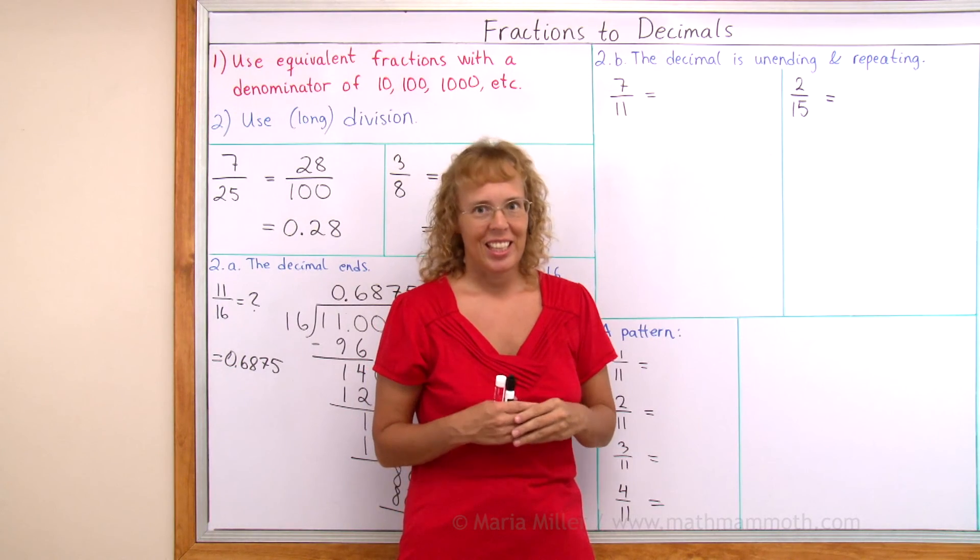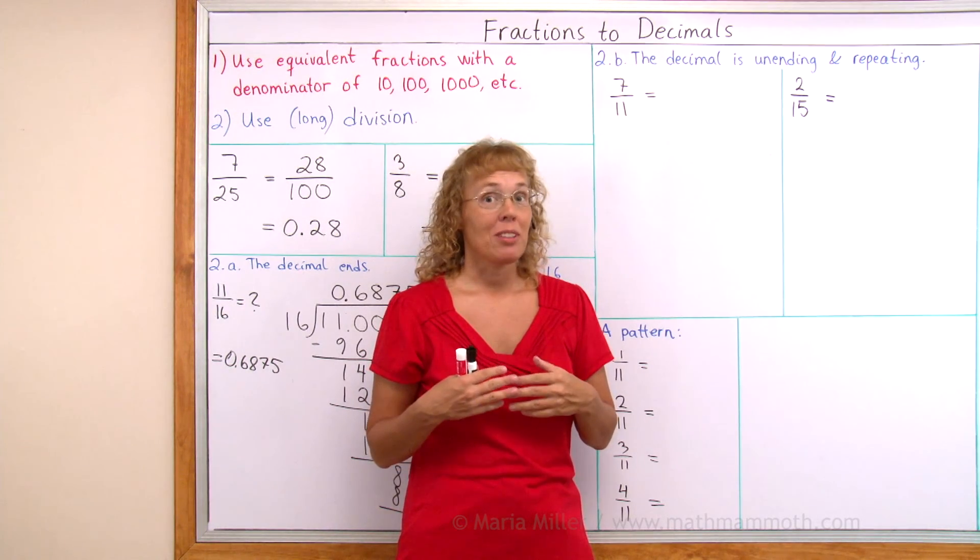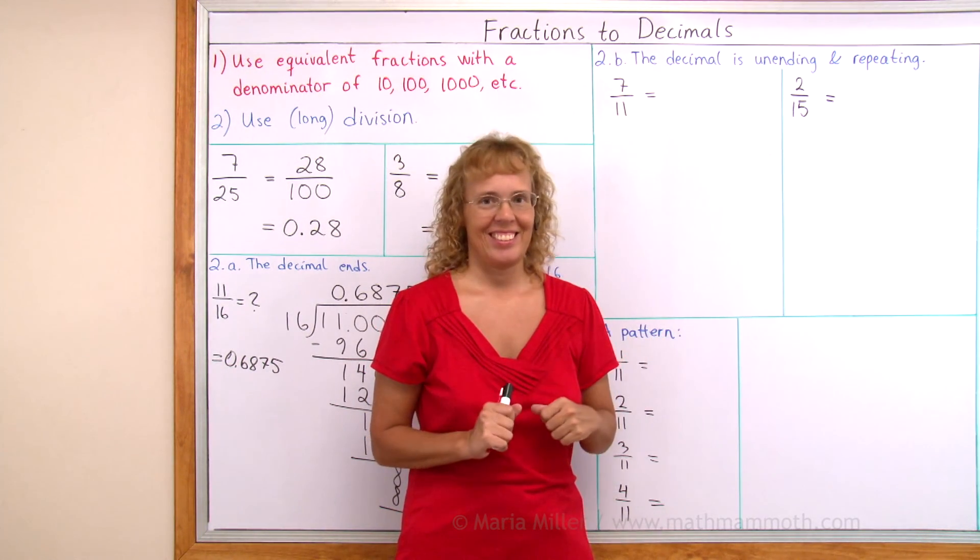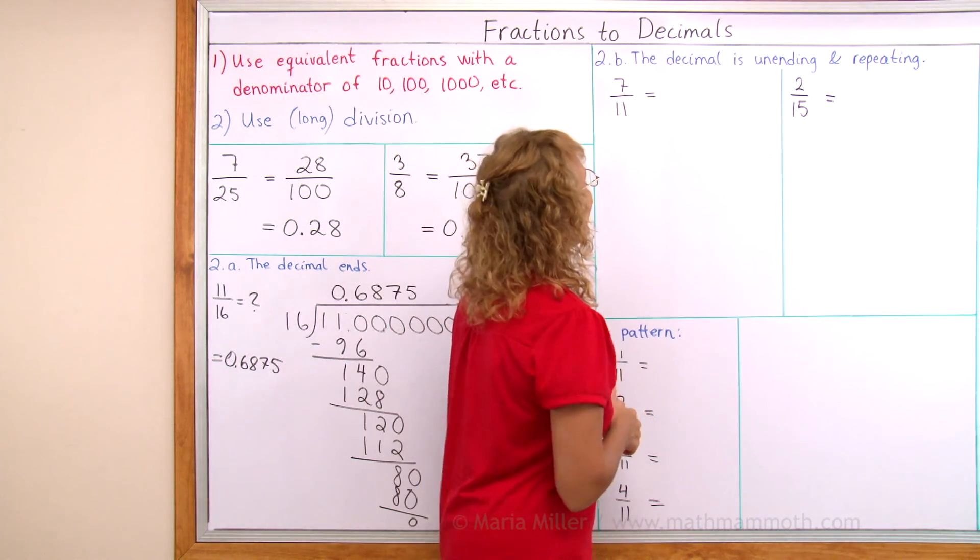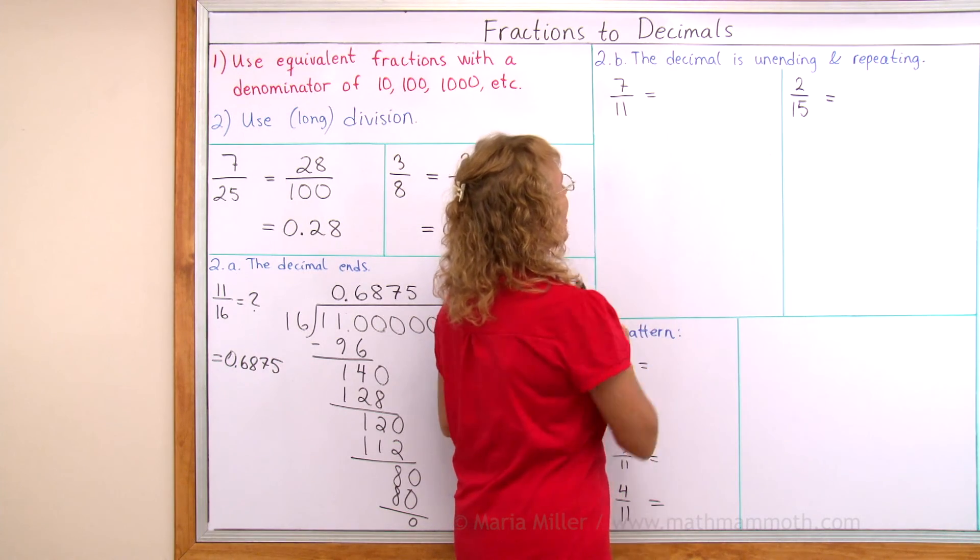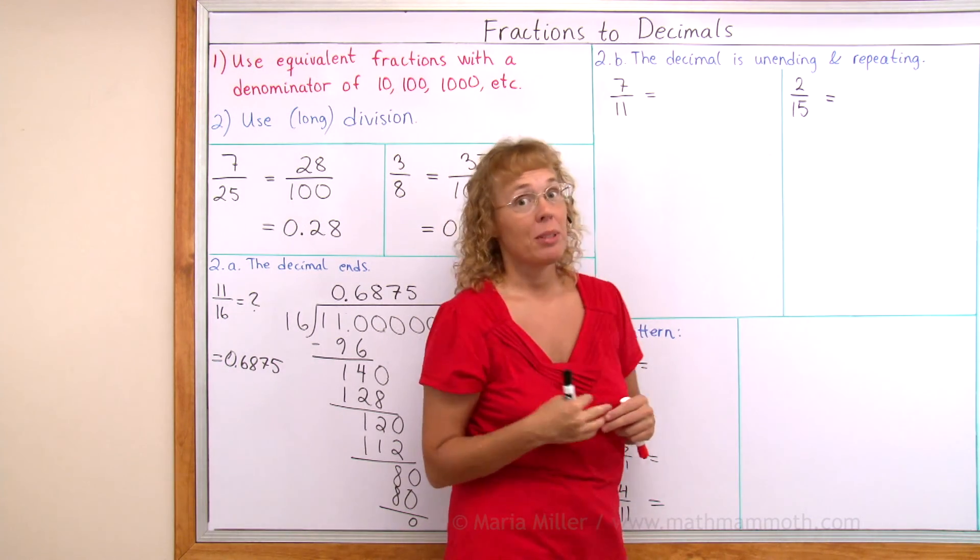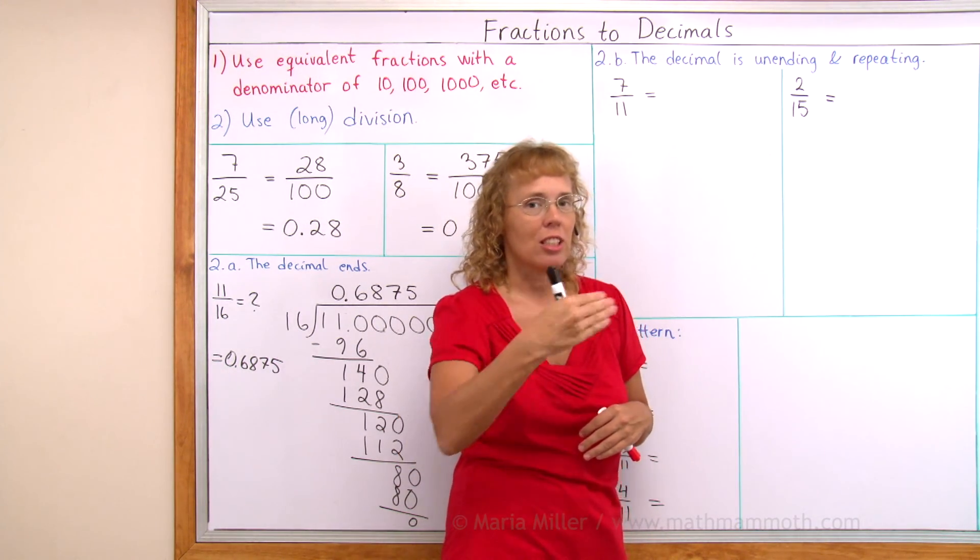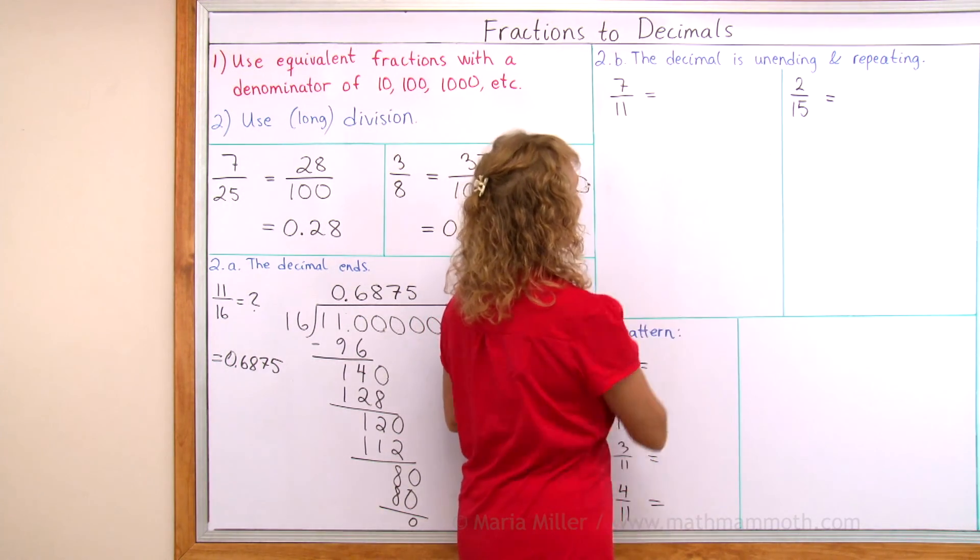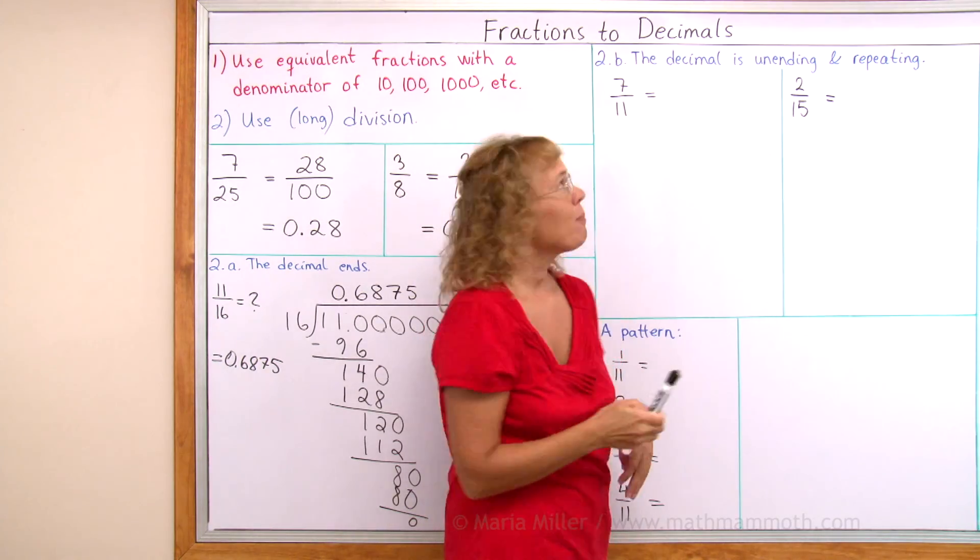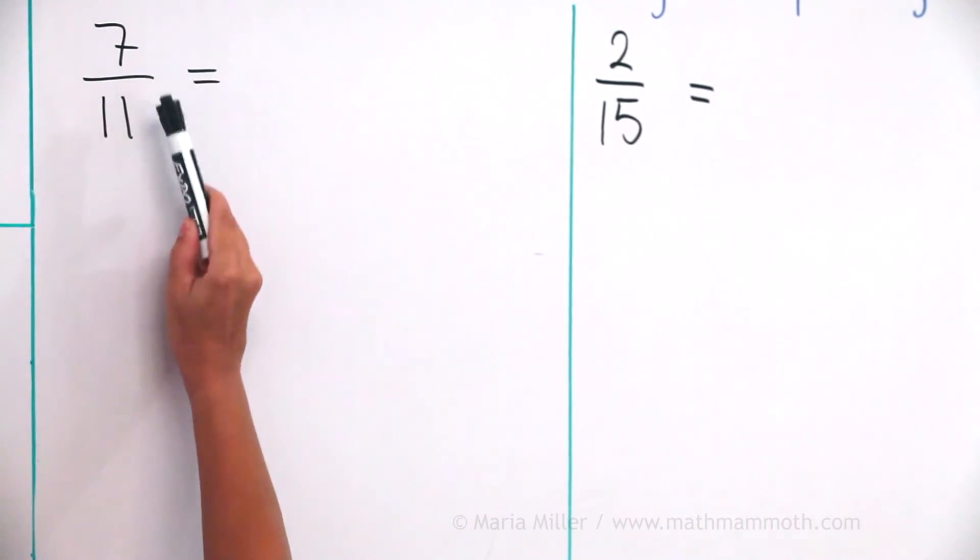Now we're going to look at the case where the decimal actually does not end. If you've never seen it before, it's kind of fascinating. This time the decimal we get is unending and repeating. Some of its digits are going to repeat. 7 elevenths as a decimal.